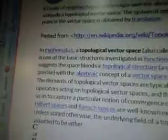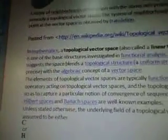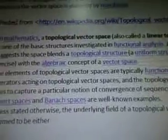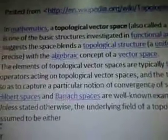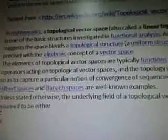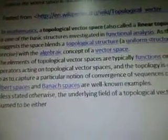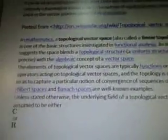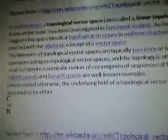In mathematics, a topological vector space, also called a linear topological space, is one of the basic structures investigated in functional analysis. As the name suggests, the space blends a topological structure — a uniform structure to be precise — with the algebraic concept of a vector space. The elements of topological vector spaces are typically functions or linear operators acting on topological vector spaces, and the topology is often defined so as to capture a particular notion of convergence of sequences of functions.